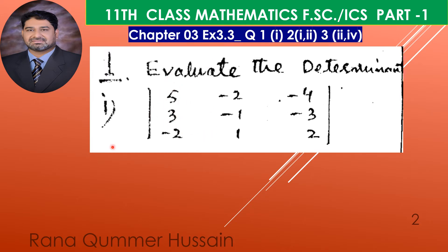You have determinants given and you have to evaluate them — find their values. Can you tell which type of determinant this is? How many rows are there? One, two, three — so we have a three-by-three determinant with three rows and three columns.